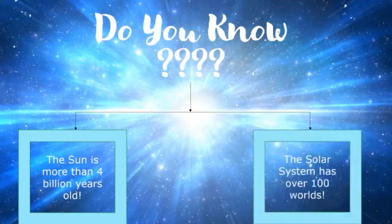The solar system has over 100 worlds, including the moons, asteroids, comets, dwarf planets, our own eight planets, and the sun. I hope you understood the topic and liked the video.